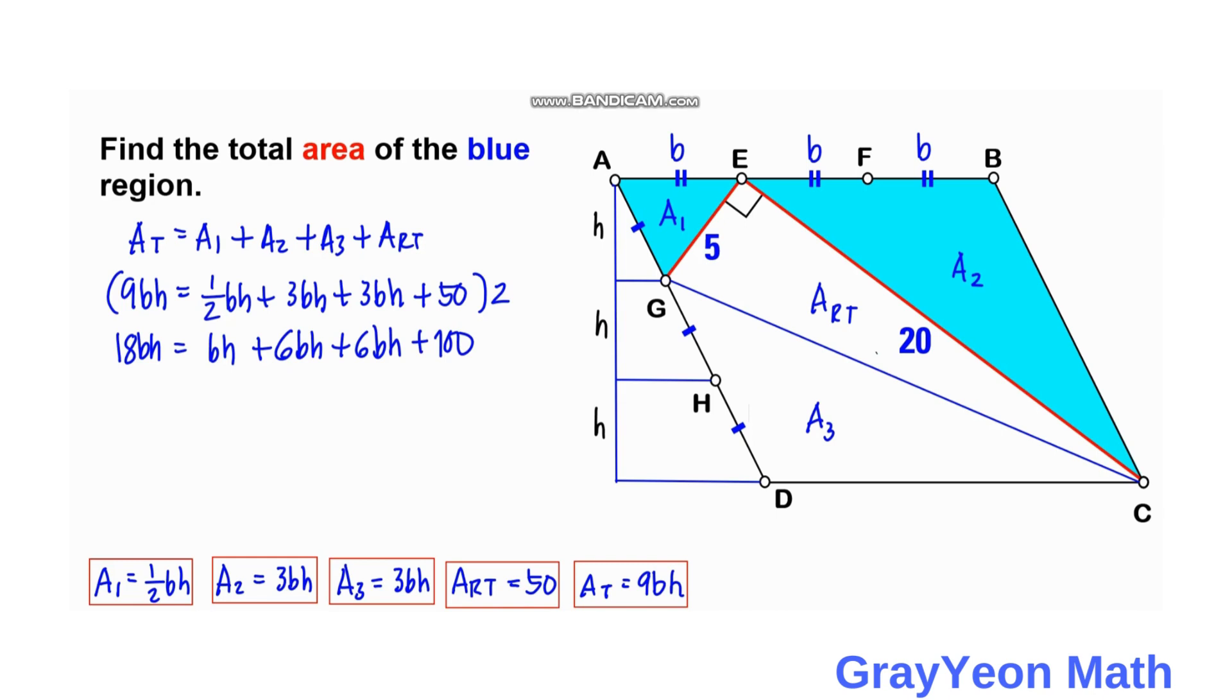So 18 minus 13. So 18bh minus 13bh is equal to 100. So we have here 5bh is equal to 100.